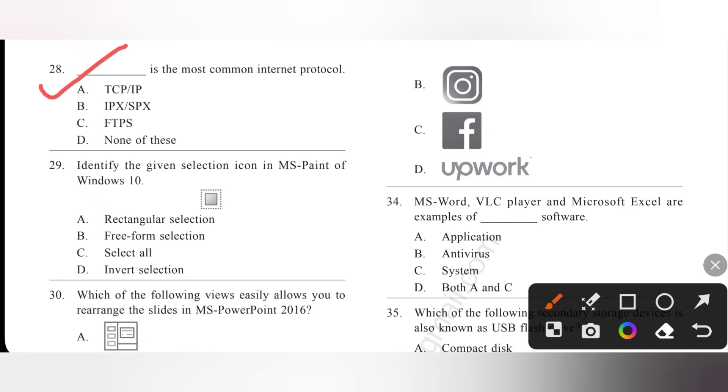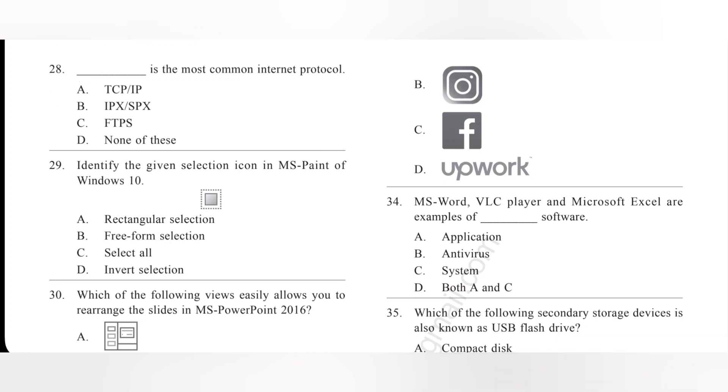Question 29: Identify the given selection icon in MS Paint of Windows 10. So, it means select all. Option C is the correct answer.